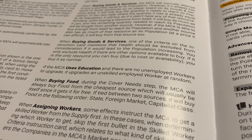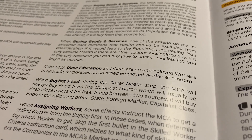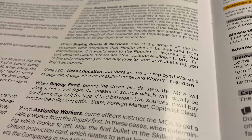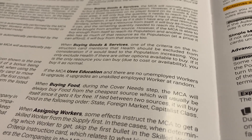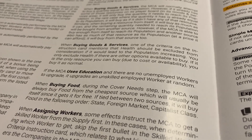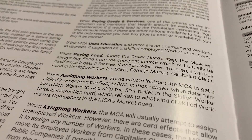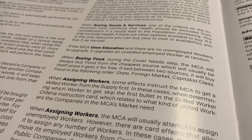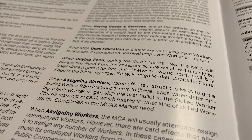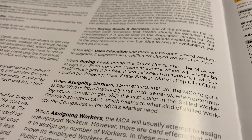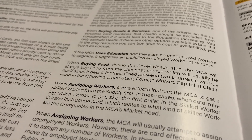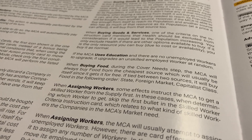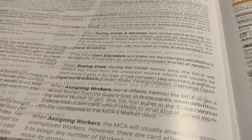If the middle class player uses education and there are no unemployed workers, then they will randomly upgrade a working unskilled worker. Middle class will always buy from the cheapest source for food, prioritizing themselves first since they would get it for free. Beyond that, if they are unable to have enough food to cover their needs, they will look at the state second, foreign market third, then capitalist class.